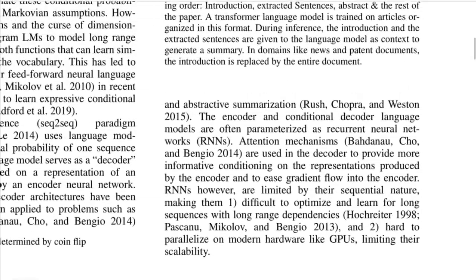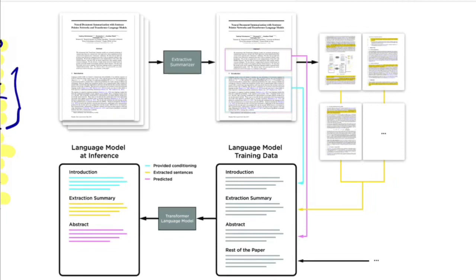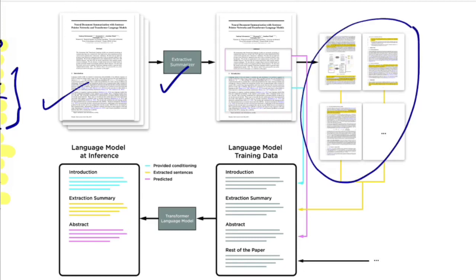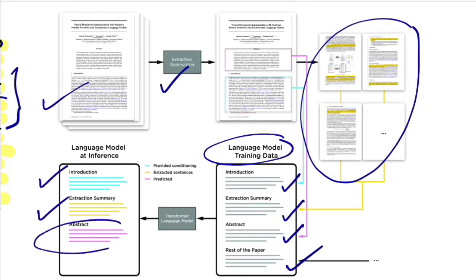Before diving into the technique, they have a diagram showing the entire end-to-end flow. You start with a document — in this case a research paper — which passes through a module that does extractive summarization, highlighting important sentences and segments. Then language model training is done by formatting training data into four segments: the introduction, the extracted sentences, the abstract, and the rest of the paper. During inference, the model is given the introduction and extracted summary as prefix context, and the abstract is what the model generates, evaluated using ROUGE and BLEU metrics.